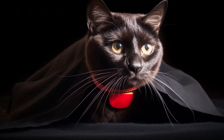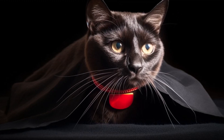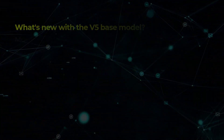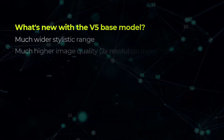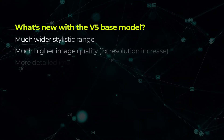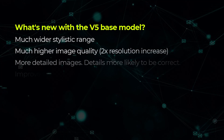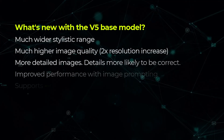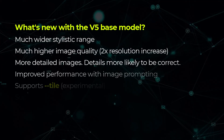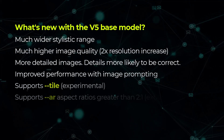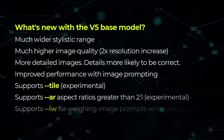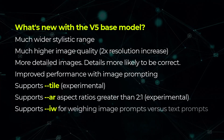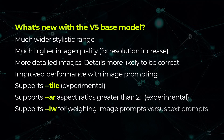This new version is looking really sharp. On the Discord server they talk about how it has a wider stylistic range, higher image quality, more detailed images — so things like faces and hands are more correct — improved performance of image prompting, and it also supports tile and aspect ratio straight out of the box. With version 4 we had to wait a little bit, and image weight when weighing image prompts against your text is also supported, which is pretty cool.